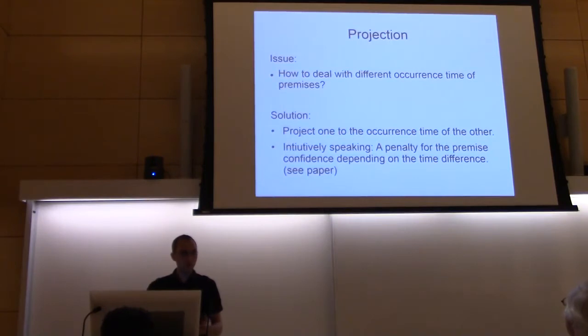What if both the premises we selected have a different occurrence time? For example, this corresponds to two observations, and the observations were not happening at the same time. This is a quite natural scenario, so we have to deal with it. The solution we took here was to project the occurrence time of one premise to the occurrence time of the other. This projection basically means we decrease the confidence value, so for the other time there is less evidence of this.